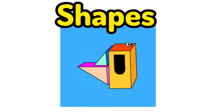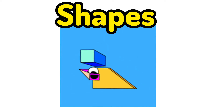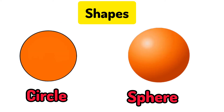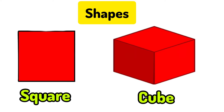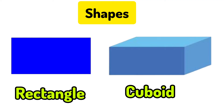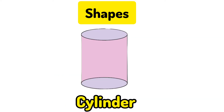Let me introduce a few shapes and their 3D shapes — it will be easy for your understanding. First, we have circle and its 3D shape is sphere. Second, we have square and its 3D shape is cube. Next, we have triangle and its 3D shape is cone. The next is rectangle and its 3D shape is cuboid. And we also have cylinder shape.